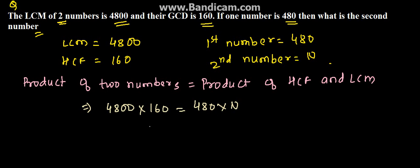So here we can find the value of N, that is equal to 4800 times 160 divided by 480. Here we can cancel, so 10 times 160 which is equal to 1600.